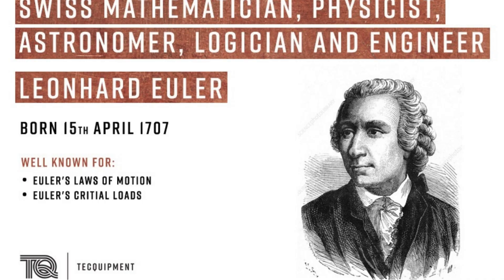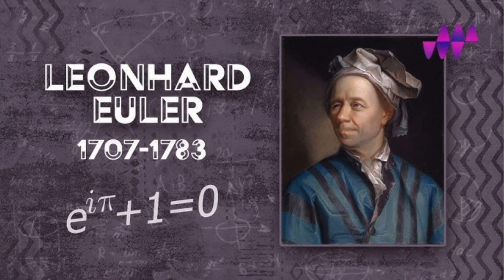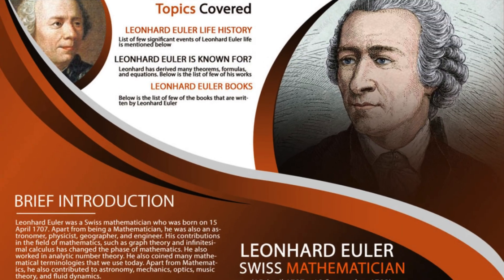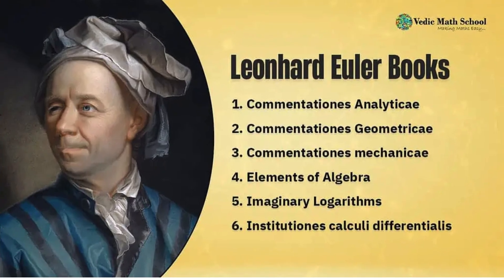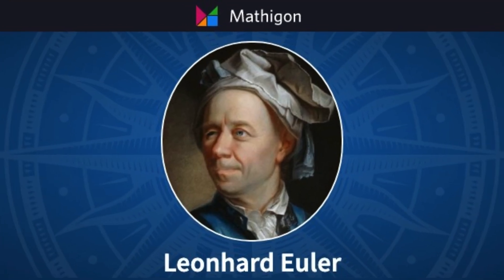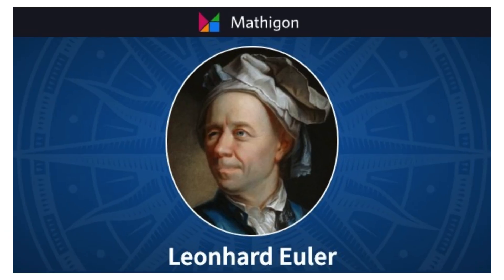Euler's Formula, known as the most beautiful equation in mathematics, connects five of the most important numbers in a single elegant statement. Number Theory: Euler advanced the study of prime numbers and introduced the Euler totient function, which later became essential for modern cryptography and internet security. Mechanics and Fluid Dynamics: He expanded Newton's work, creating the Euler equations that explain how fluids move and how rigid bodies rotate — foundations for engineering, aerodynamics, and physics.